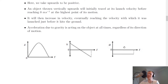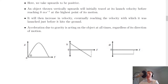For the acceleration-time graph, acceleration due to gravity acts on the object at all times regardless of its direction of motion. Whether going up or down, only gravity's acceleration applies, giving a constant horizontal line at negative 9.8 meters per second squared. For the displacement-time graph, we get a curve that goes up to the highest point and back down — spread out over time as the ball rises and then falls back to the ground.